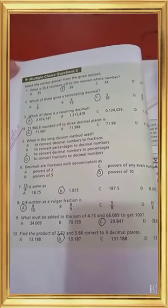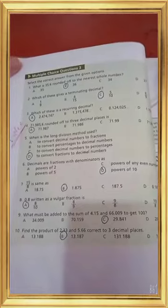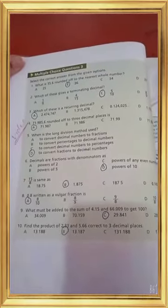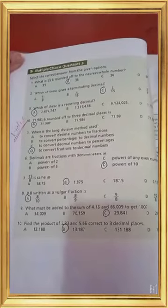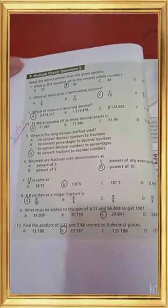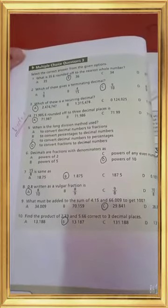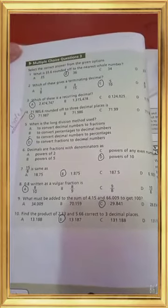Which of these is recurring decimal? We know that recurring means repeat, repeat and repeat. Then look at all these numbers. Option number A: 2.47, 747, 747, 747, 747 and so on. Then A is a recurring decimal.